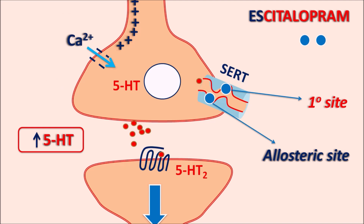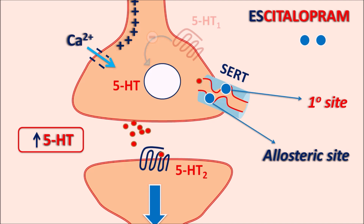As 5-HT levels are increased, they can also affect the auto-inhibitory presynaptic receptors. Within the presynaptic neurons there are 5-HT1 receptors which are auto-inhibitory in nature — they inhibit the release of 5-HT from the presynaptic neurons. When 5-HT levels are excessively increased, they produce desensitization of these 5-HT1 receptors, resulting in further pharmacological actions of escitalopram. Thus, this drug produces its actions by blocking serotonin reuptake and by desensitization of auto-inhibitory 5-HT1 receptors.